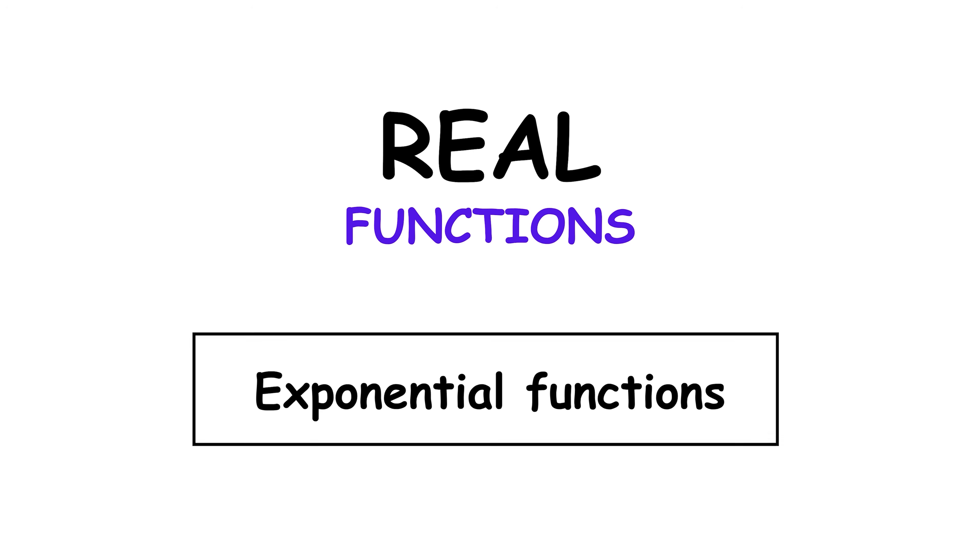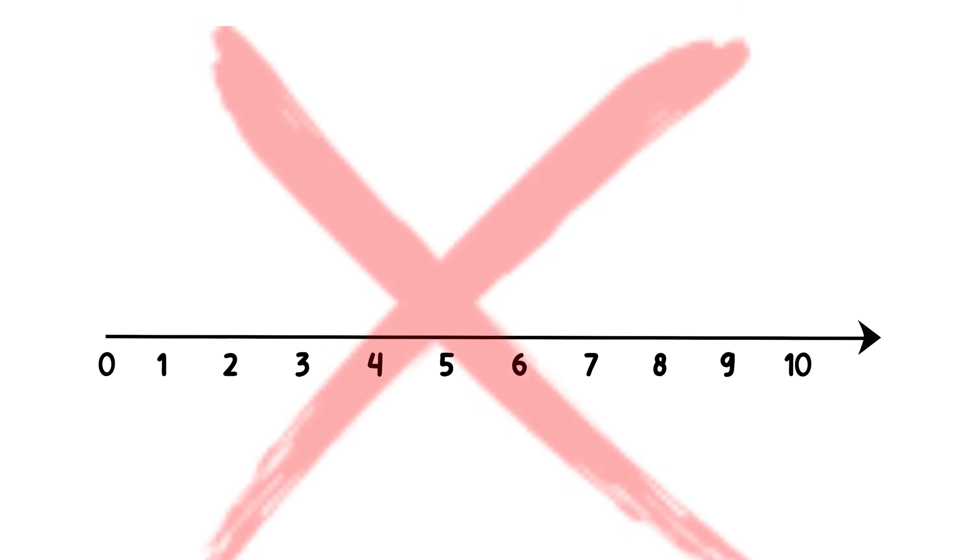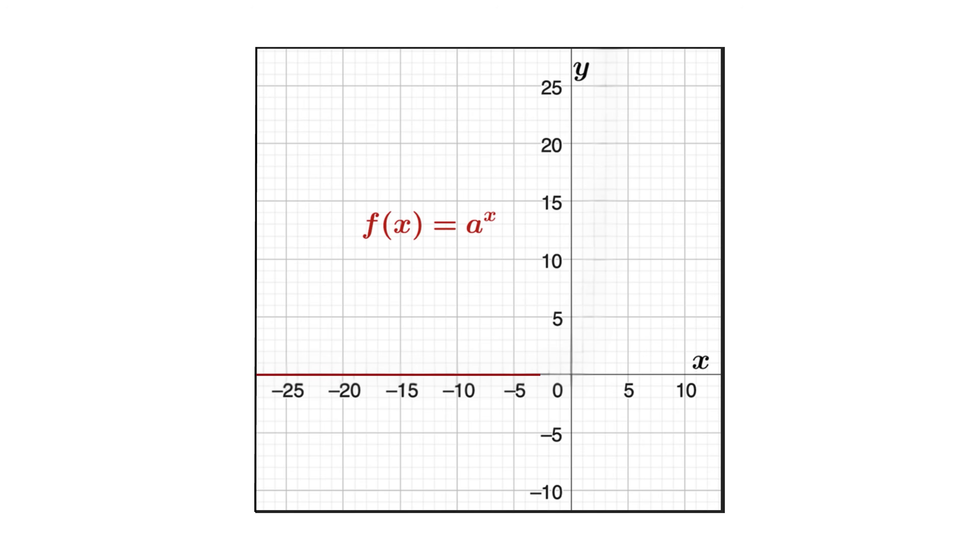Exponential functions. Exponential functions have the form f of x equals a to the power of x, where the base a is a positive number different from 1. If a is greater than 1, the function grows rapidly.